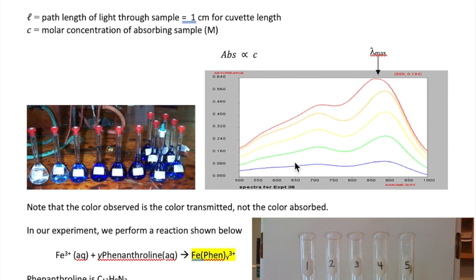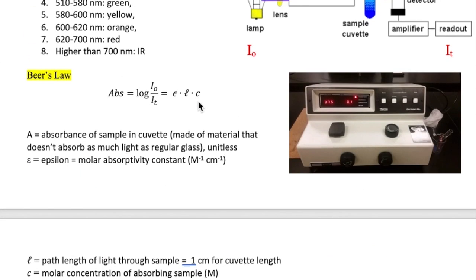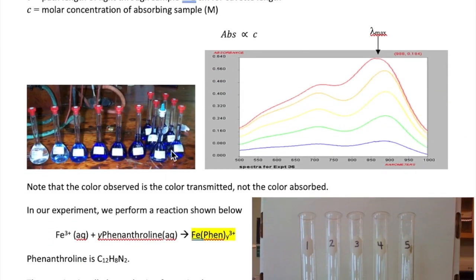that light is not going to be seen because that's absorbed by the sample. But the light that's transmitted are all in this region right here, which is in the blue, violet, green region of the visible light. And so that's why our sample looks blue to us.